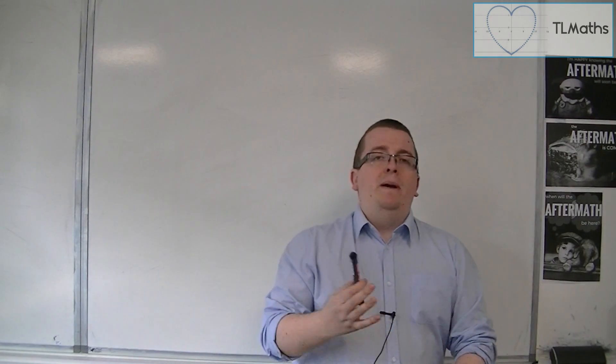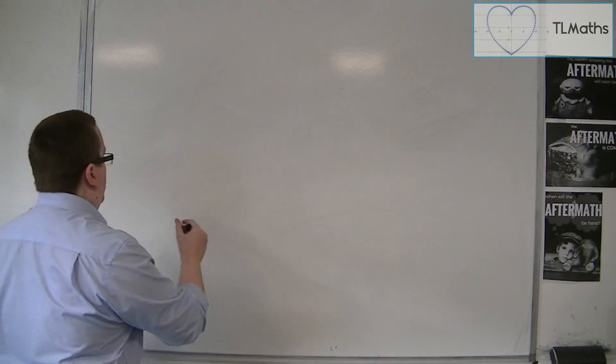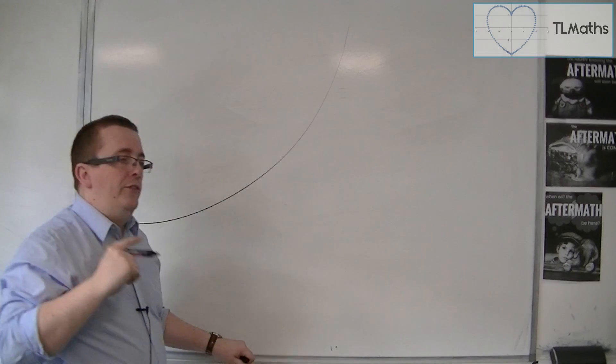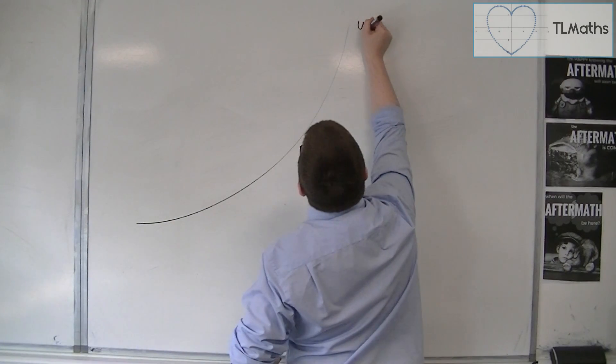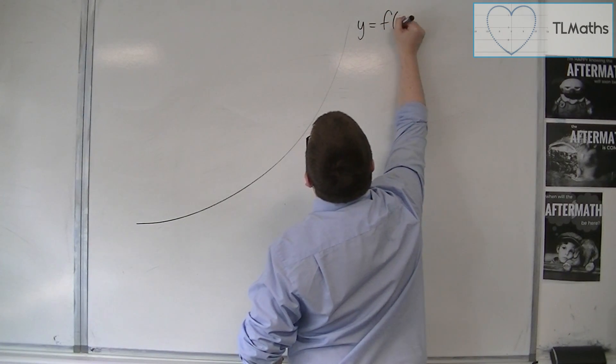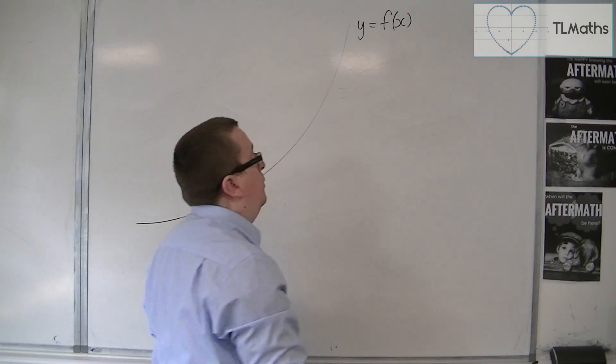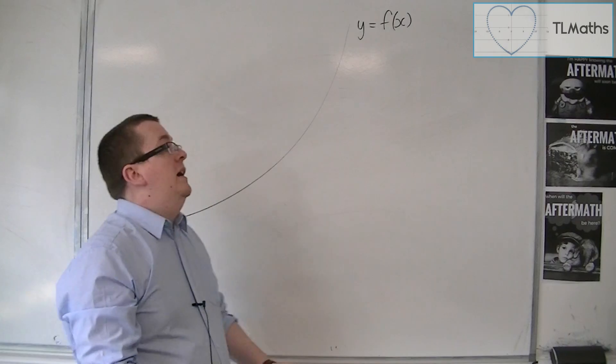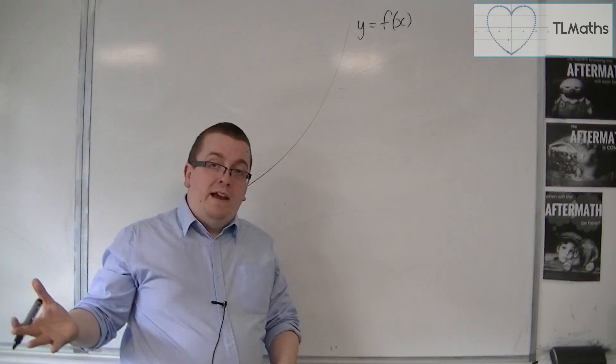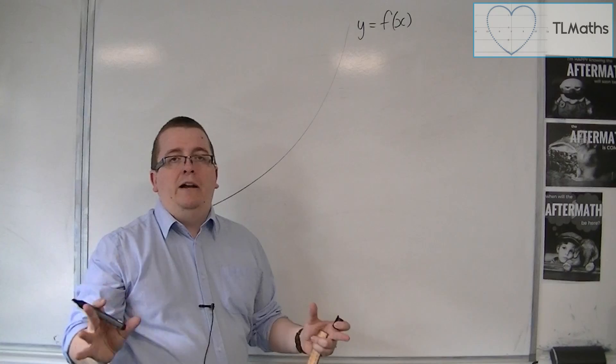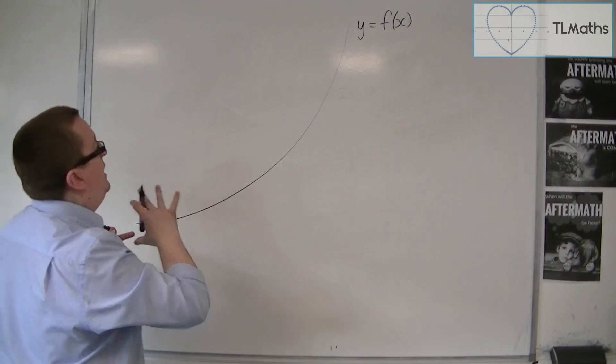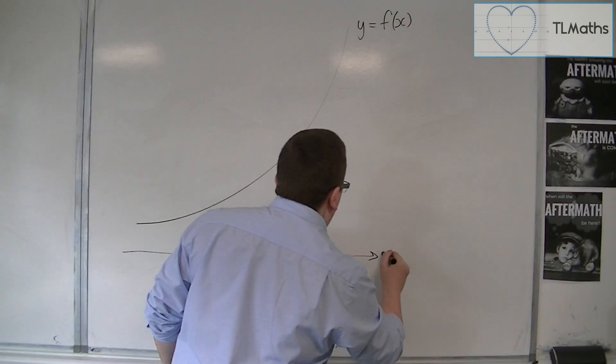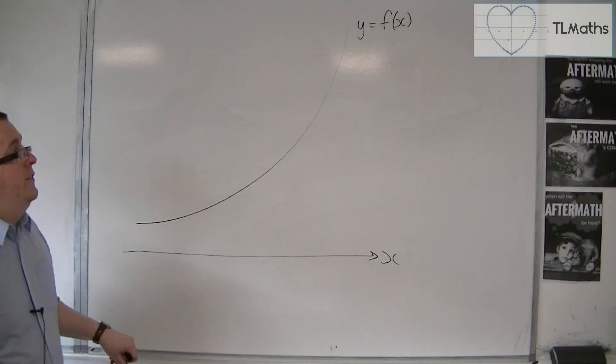So the best way to do it is to really start with a curve. So let's say here is my curve. And let's say that this has the equation y equals some function of x, y equals f of x. It might be y equals x squared, it might be x cubed, it might be x cubed plus x squared. Who knows? It doesn't matter. So this is a generic curve. And let's put an x-axis in. So there is the x-axis.